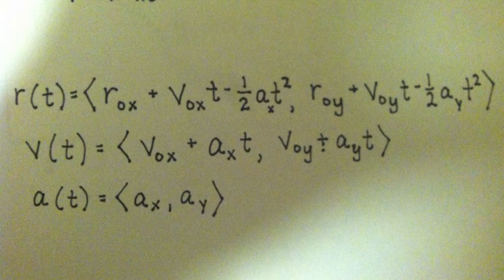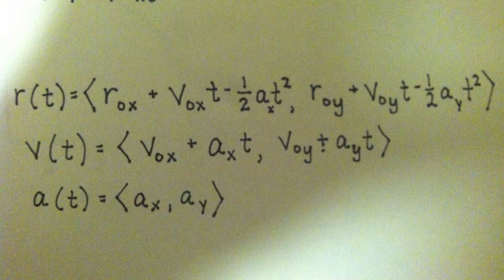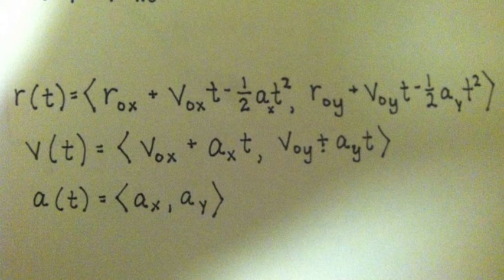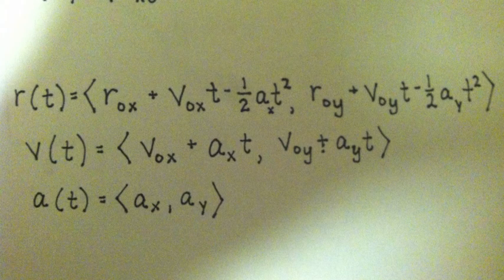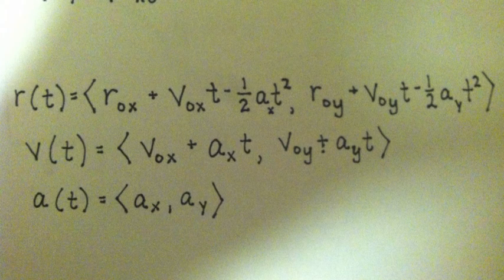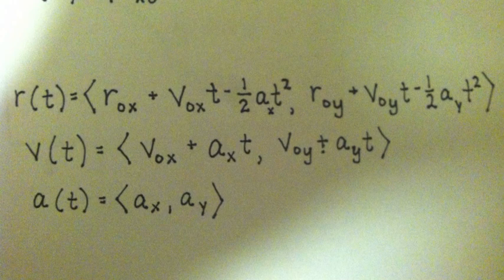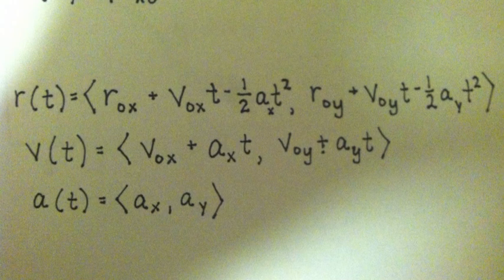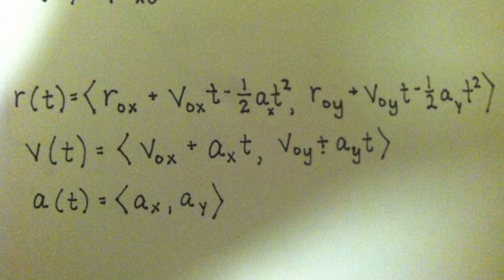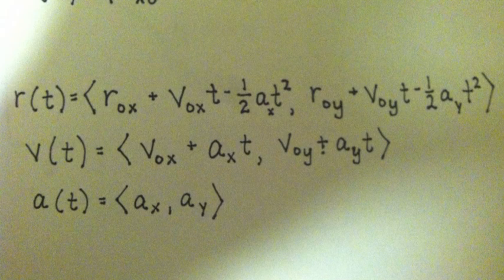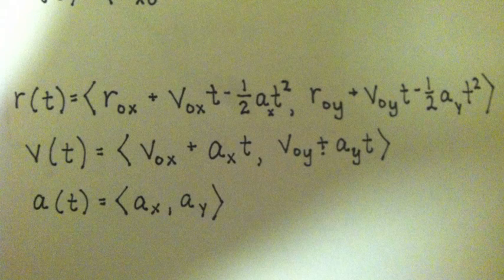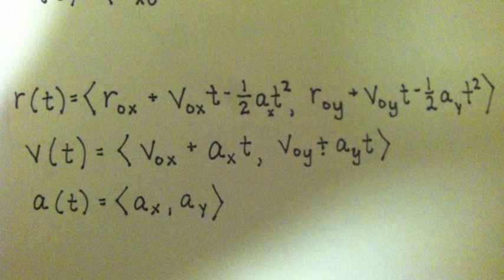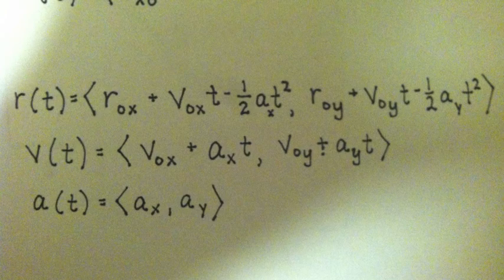Velocity can be given similarly. The velocity vector v(t) can be written as the derivative of r(t) with respect to t. So v(t) can be equal to v_0x + a_x*t as the x component and v_0y + a_y*t as the y component. And a(t) lastly can be written as the derivative of v(t) with a_x and a_y as the components.